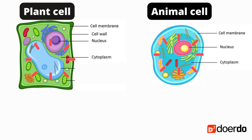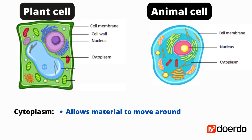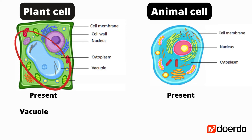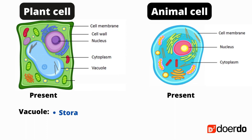This jelly-like substance is called cytoplasm, which allows materials to move around the cell. It is present in both plant cells and animal cells. A vacuole is also present in both plant and animal cells — it is a storage space that contains water and other nutrients.